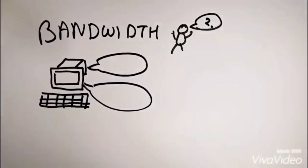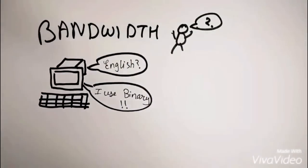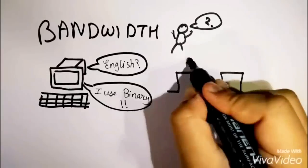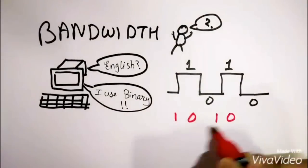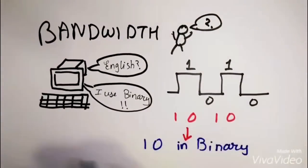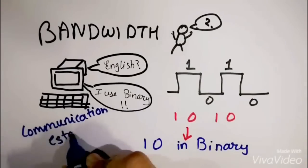Computers use the binary language of ones and zeros to communicate with each other. These signals of ones and zeros are transmitted as electric pulses. A high pulse indicates a one, while a low pulse indicates a zero.